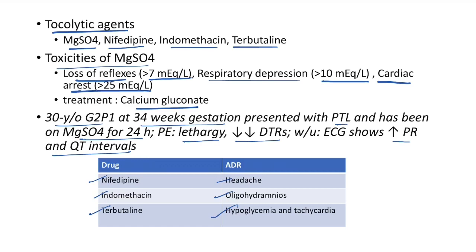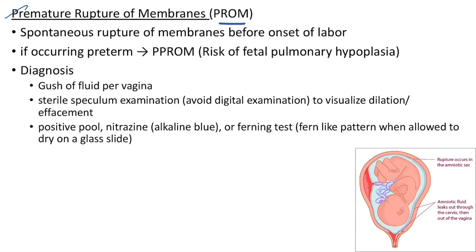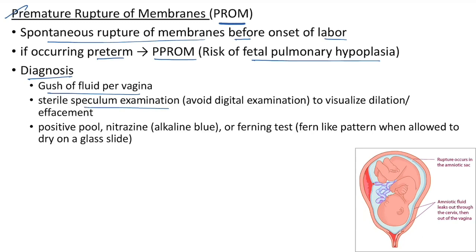Premature rupture of membranes (PROM) is spontaneous rupture of membranes before onset of labor. If occurring preterm, it is called PPROM. In PPROM, the risk of fetal pulmonary hypoplasia increases. Diagnosis: gush of fluid per vagina, sterile speculum examination to visualize dilatation and effacement. Avoid digital examination in PROM (risk of infection). Positive pool, positive nitrazine test, and positive ferning test indicate PROM.